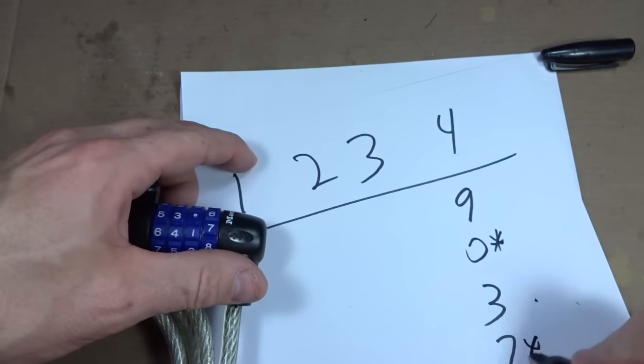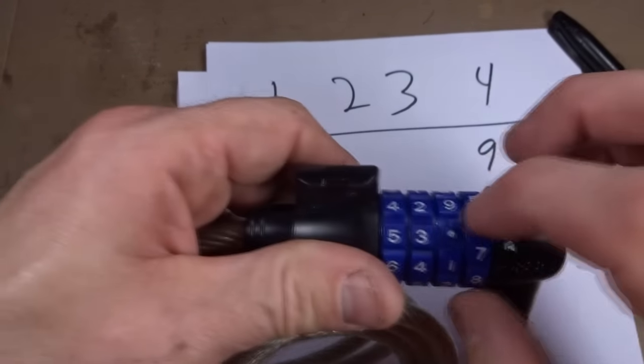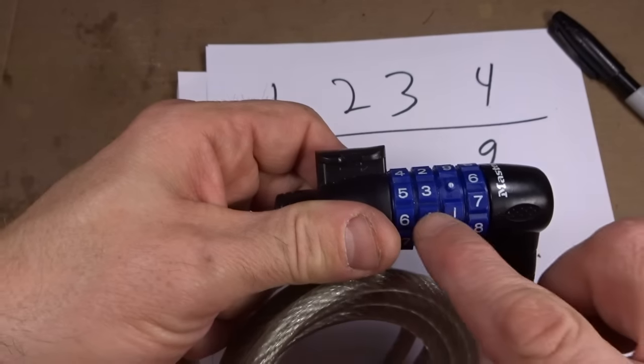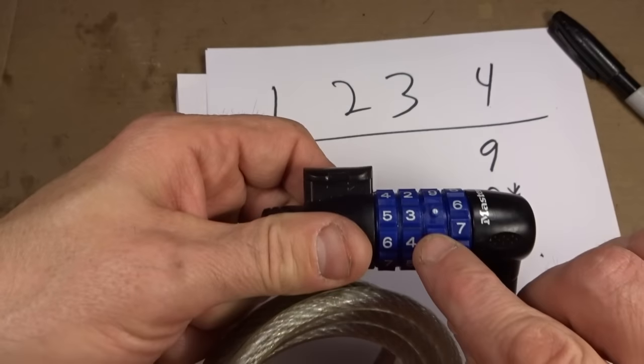And the seven kind of catches a little bit, so I'll put a little star there. And so what I want to do is do that for each wheel in turn until I have the various catch points for each wheel. And they'll put little stars by the ones that catch the most.